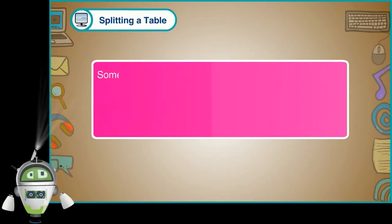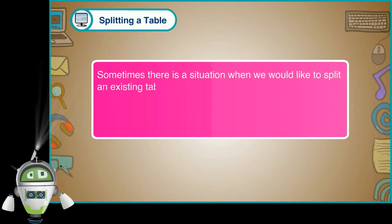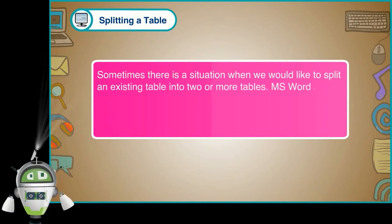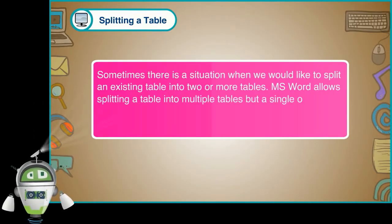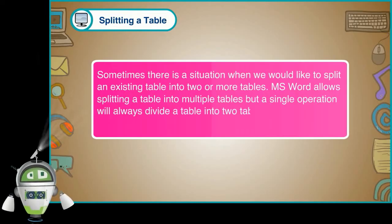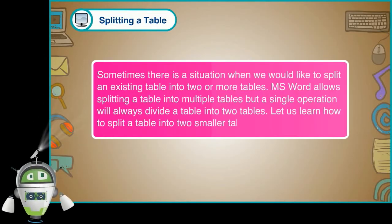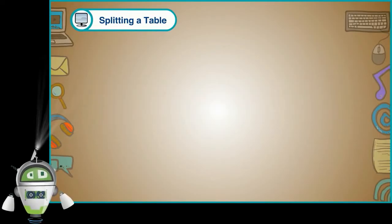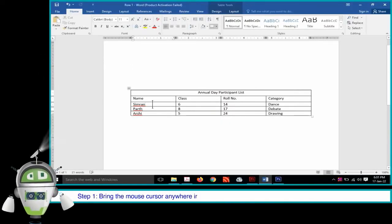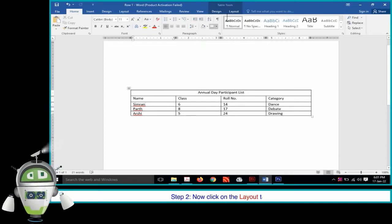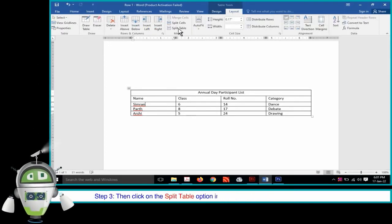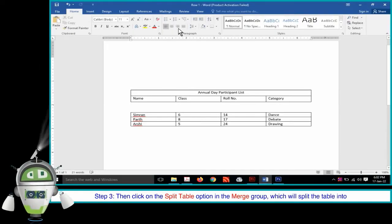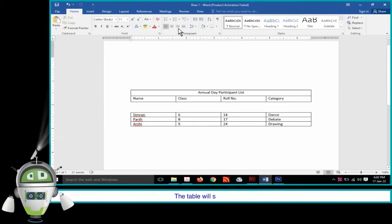Splitting a Table. Sometimes we would like to split an existing table into two or more tables. MS Word allows splitting a table into multiple tables, but a single operation will always divide a table into two. Step 1: Bring the mouse cursor anywhere in the row that should appear as the first row of the new table. Step 2: Click on the Layout tab. Step 3: Click on the Split Table option in the Merge group. The selected row will become the first row of the lower table, and the table will split into two.